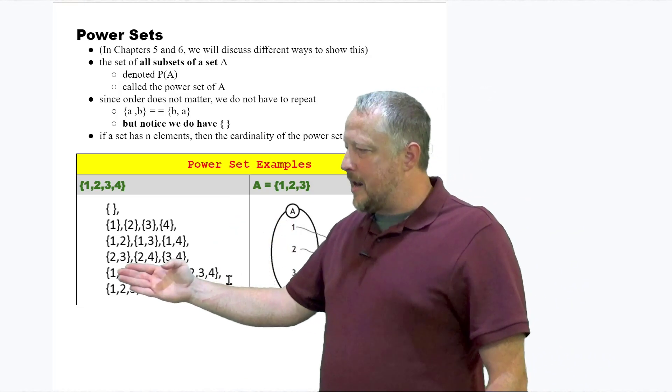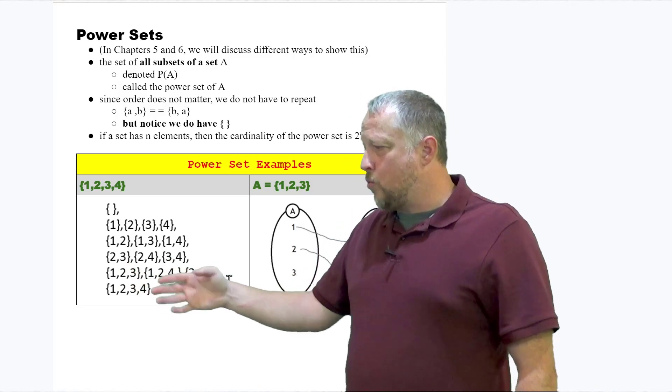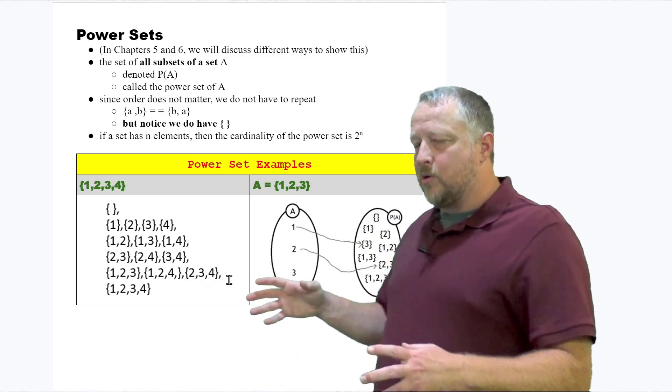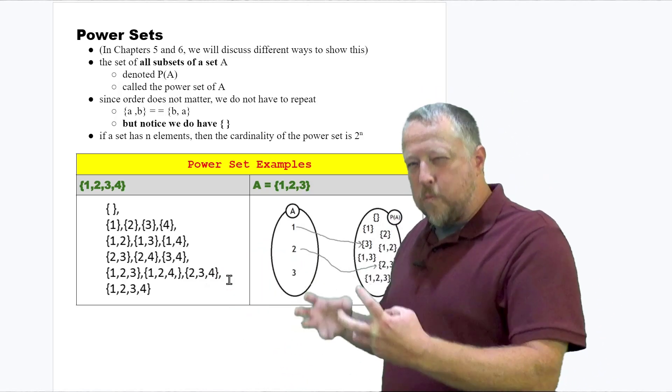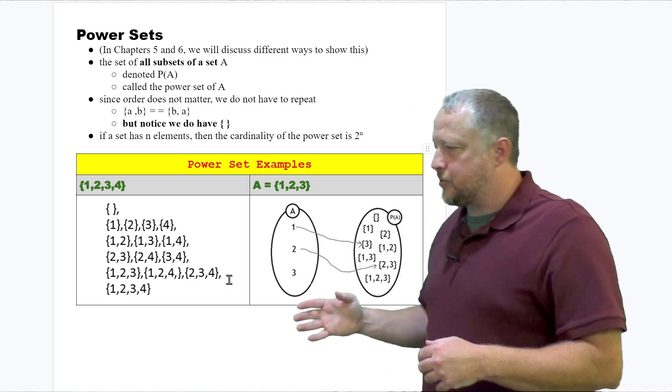Notice there's not a two, one in here. There's not a three, one in here anywhere exactly either. So notice there is an order to this, so be very careful about your power sets.